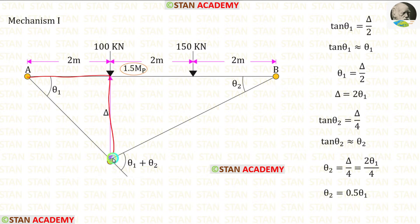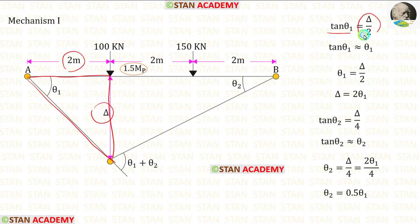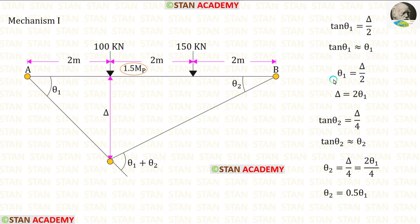Let us take this triangle. In this triangle, tan theta 1 is equal to delta upon 2. The value of tan theta 1 will be very small, so tan theta 1 will be approximately equal to theta 1. We can take theta 1 is equal to delta upon 2, and delta equals 2 theta 1.